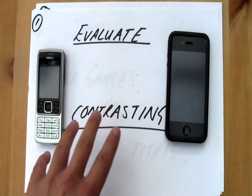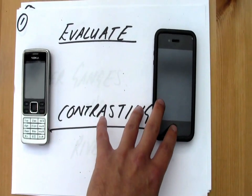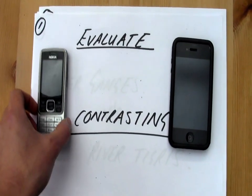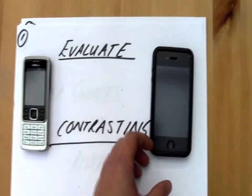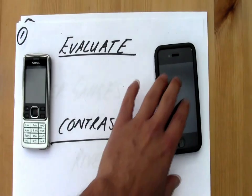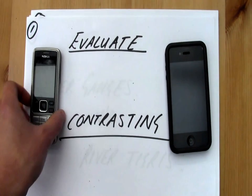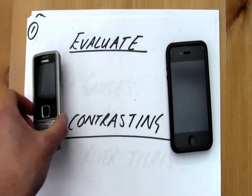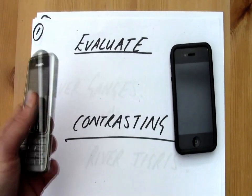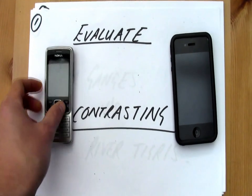But actually they are similar in some ways because both phones will allow me to send a text message and both phones will allow me to make a phone call. Now if I was to evaluate these two contrasting phones, I might say that the iPhone is better because it lets me do a lot more than this old Nokia would. But I might also say that this Nokia is much much easier to use and is probably less likely to break.